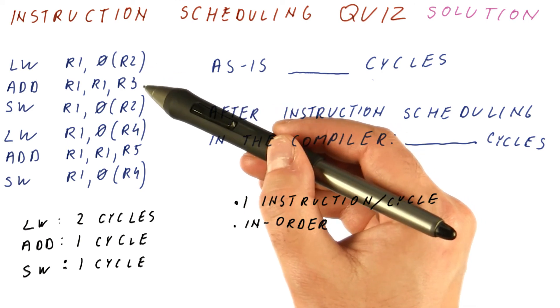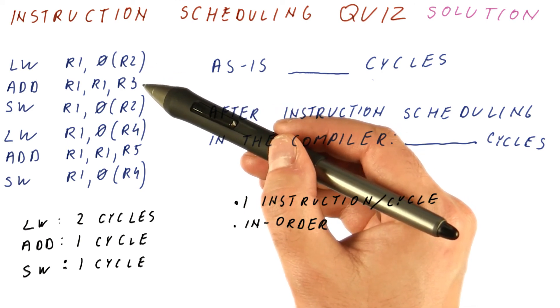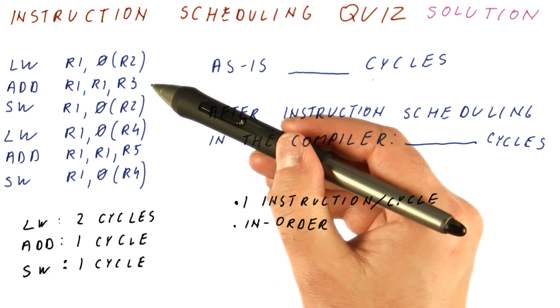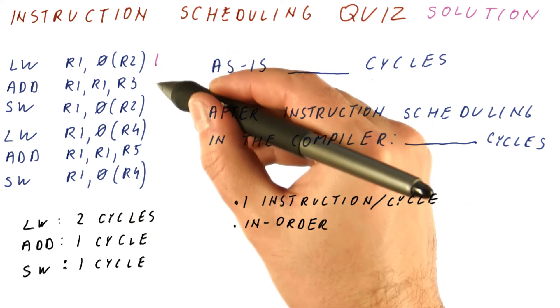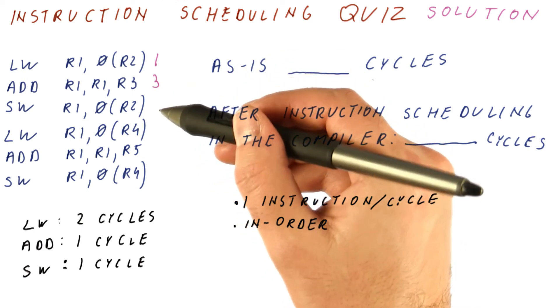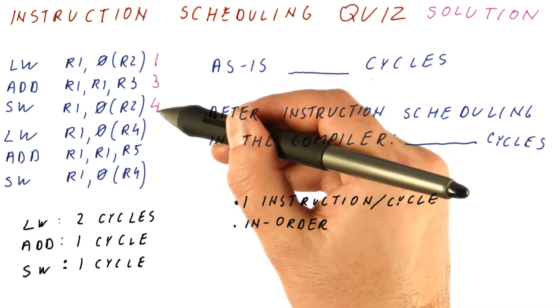If the load latency was one cycle, then the add could happen the next cycle. But because the load takes two cycles, the add can only happen in cycle three. The add takes only one cycle, so the store can proceed.